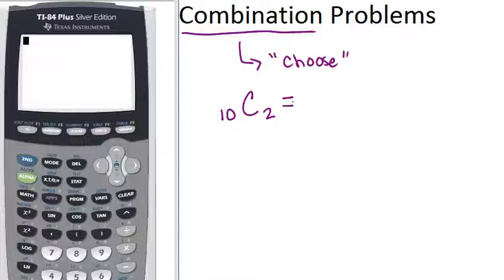We can calculate this using a formula or with our calculator if you have a graphing calculator. So the way you do it is first push in 10 into your calculator. That is your value for N. It's the larger number, the bigger set of objects that you're choosing from.